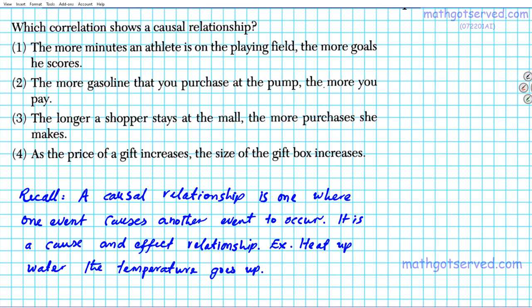Let's keep that in mind and take a look at the four options. The first one is option one: the more minutes an athlete is on the playing field, the more goals he scores. Is that always true or sometimes true? Well, this relationship between minutes the athlete plays and goals scored is not a causal relationship because this does not always happen. It's not always true.